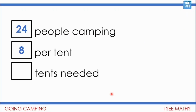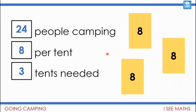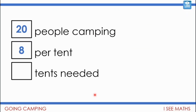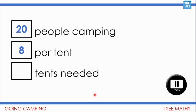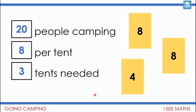Have a think about this example: 24 people camping, eight per tent — how many tents are needed? Pause the video. I would need three tents, because three lots of eight is 24. Now here's a key thing, especially for Task C: what about 20 people camping with eight per tent? How many tents would we need? Actually I'd still need three tents, because eight and eight — two tents isn't enough for 20 people, so I'd need that third tent even though it might not be full.